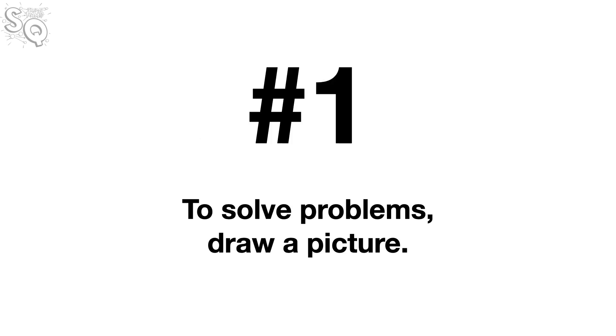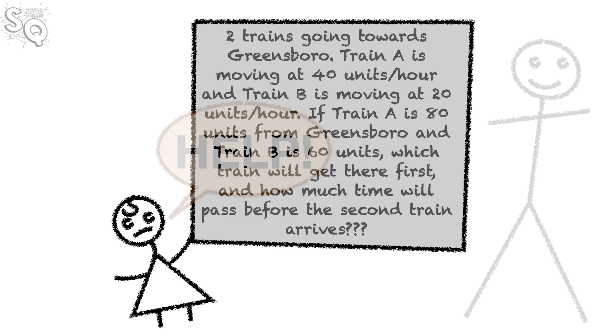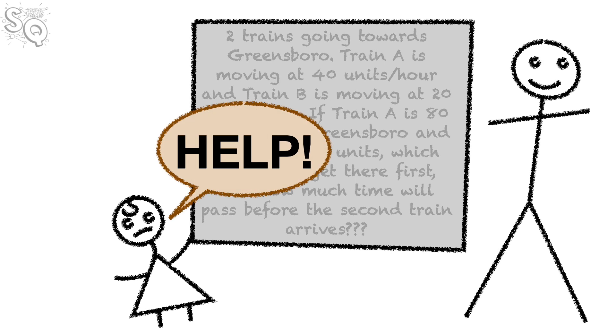Number one. To solve problems, draw a picture. Dad was the go-to person for word problems. And you'd think I'd be really good at that kind of thing because I like to read. But anyway, the trains are going in different directions, and we need to know when they meet. And I'd go to Dad and say, I have no idea what I'm supposed to do here.